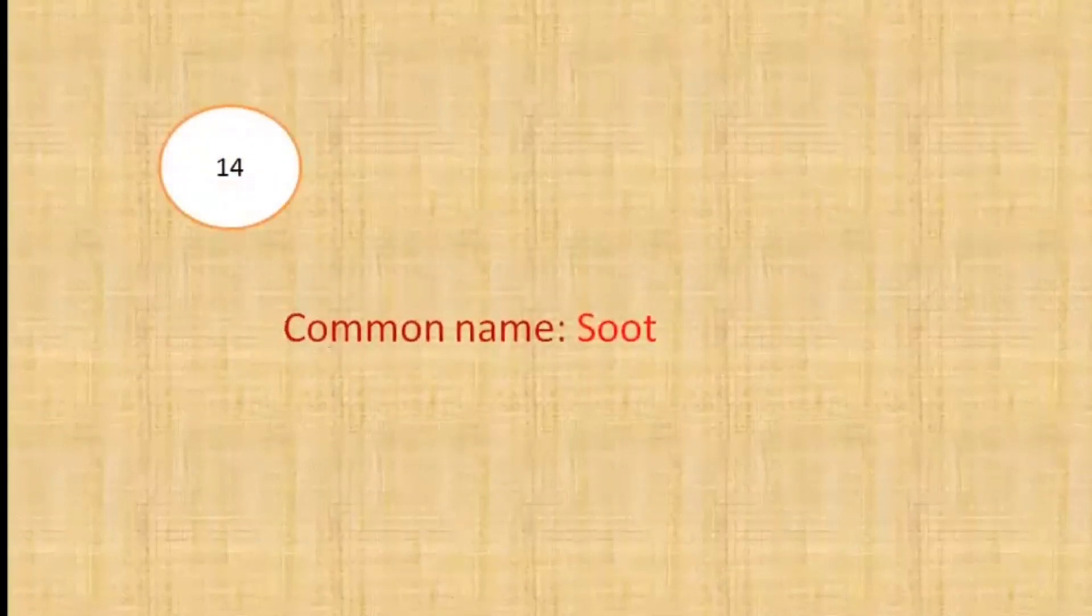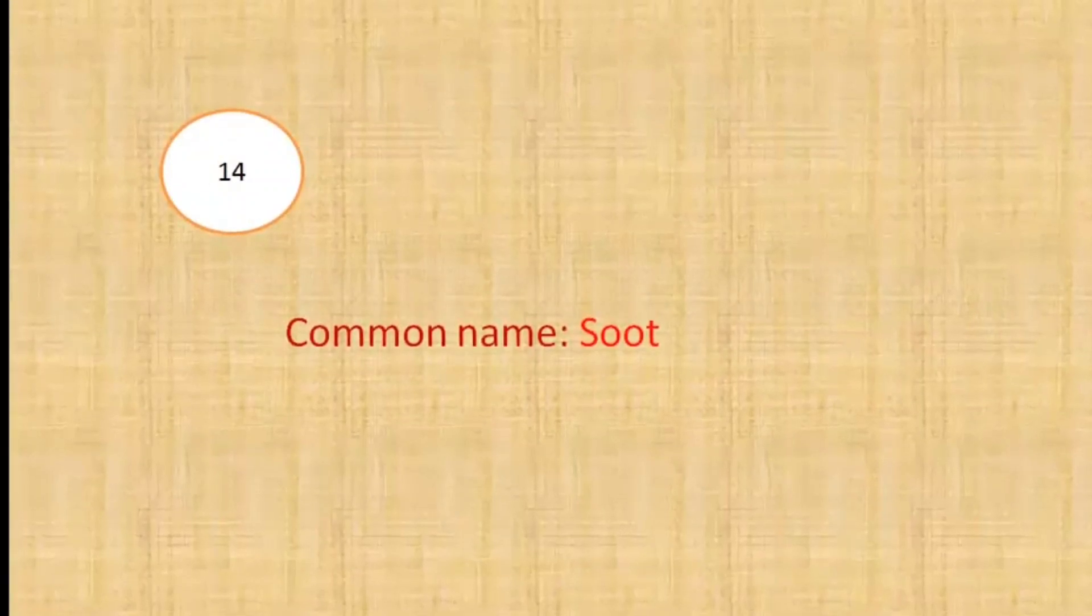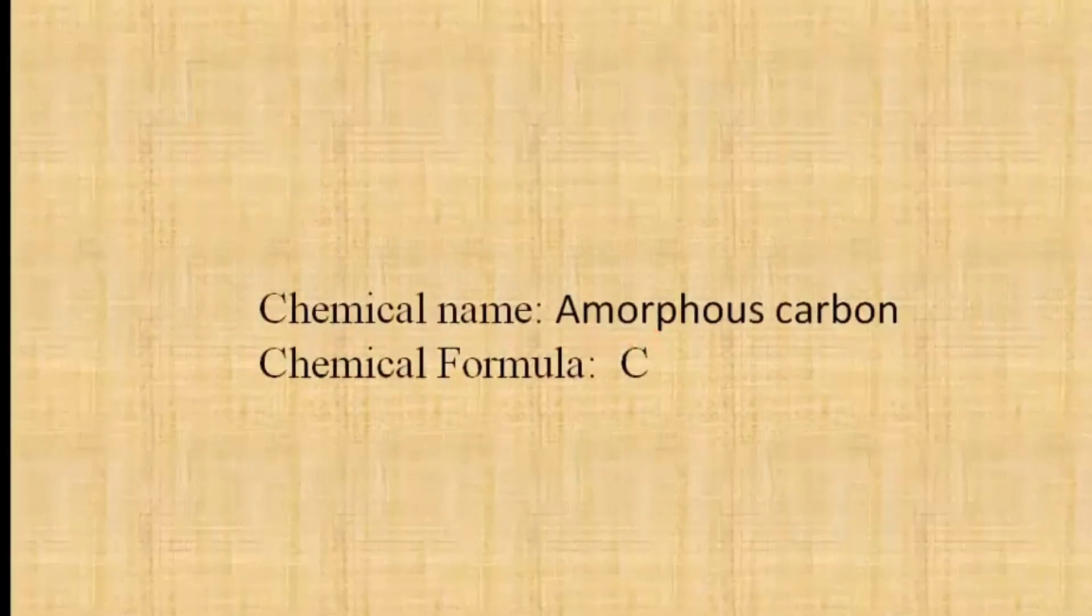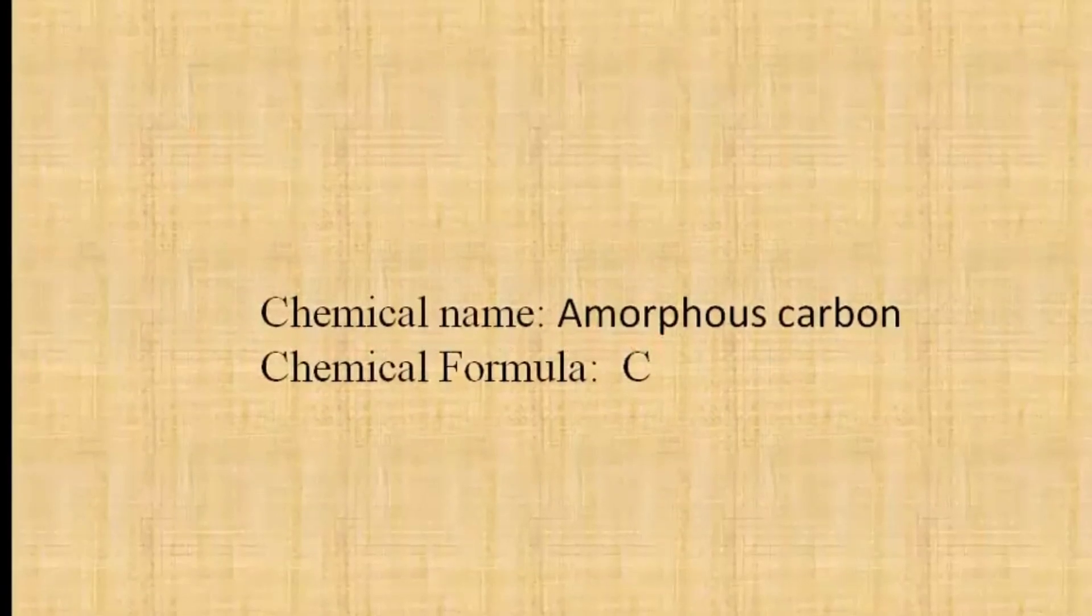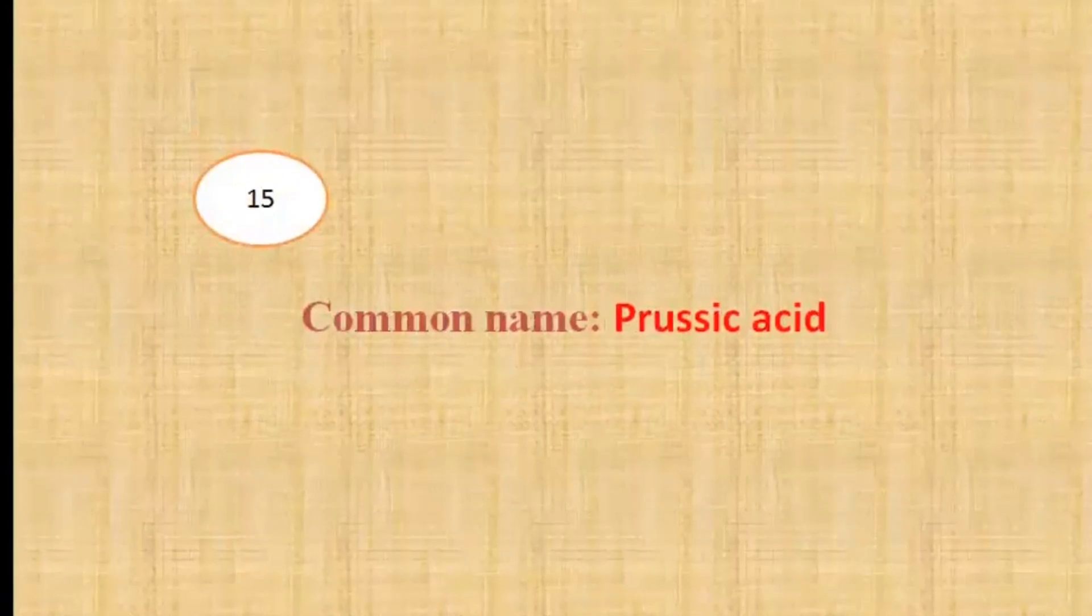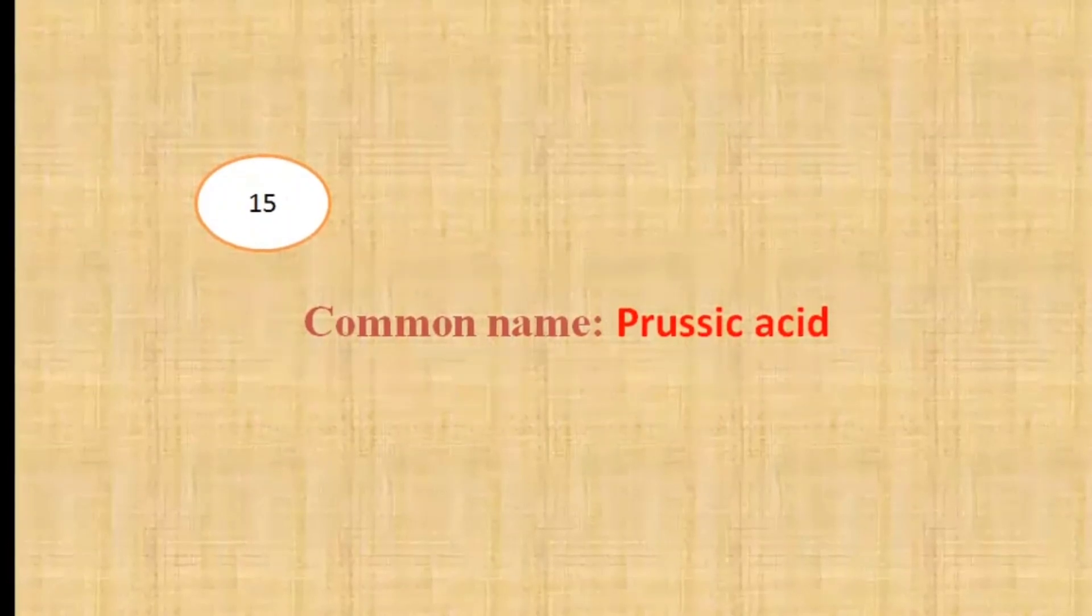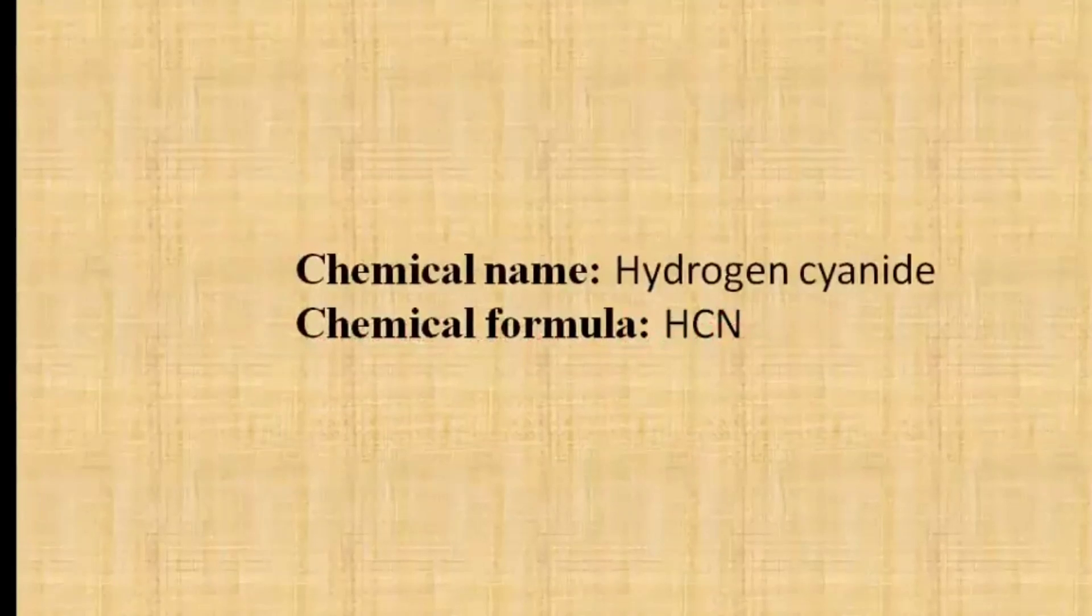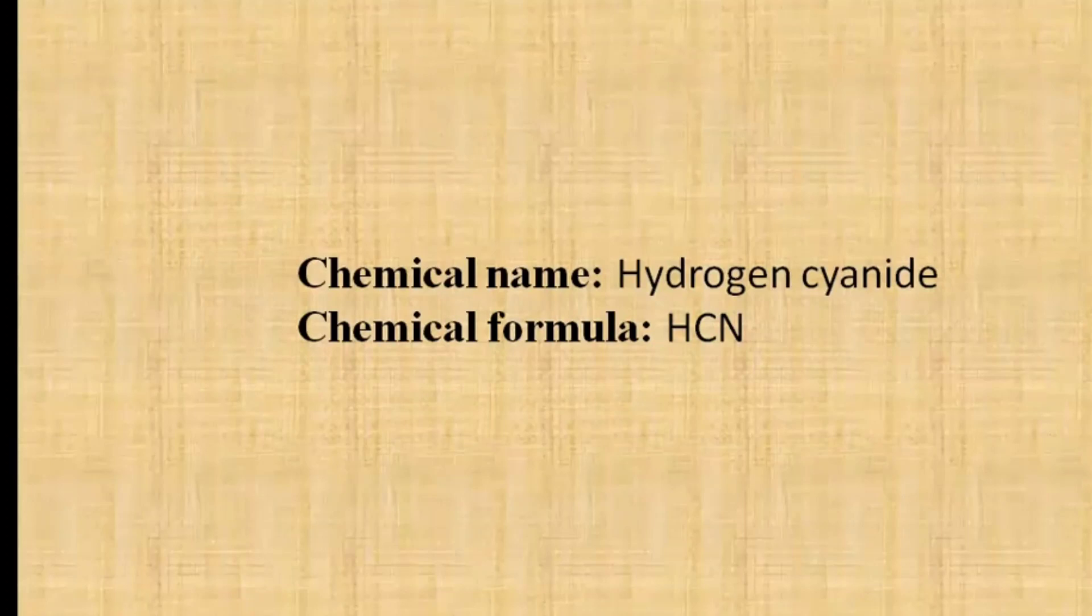The next question is the chemical name of soot. The chemical name of soot is amorphous carbon and it is simply written as carbon C. Our last question of the quiz is the chemical name of prussic acid. The chemical name of prussic acid is hydrogen cyanide and its chemical formula is HCN.